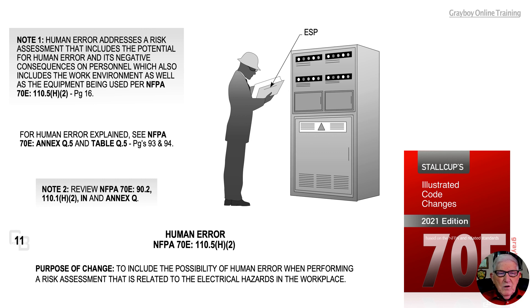Note 2 gives a suggestion: review 70E 90.2 and 110.1 H2 informational note, as well as Annex Q, for more information on human error and what can happen if you're not very careful.